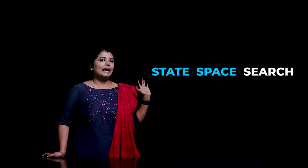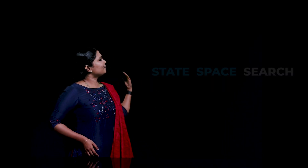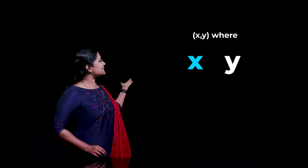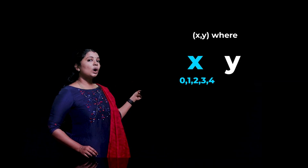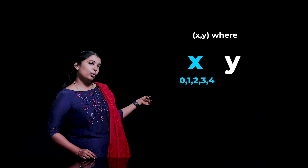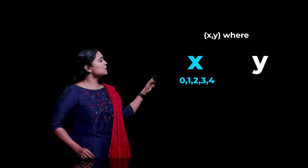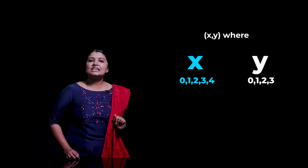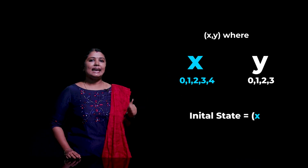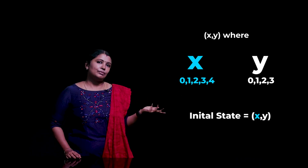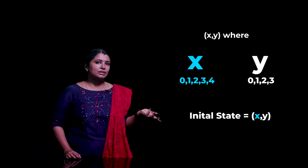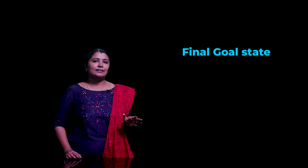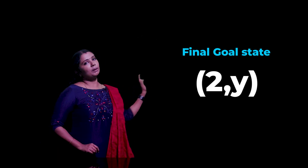So we need a representation in which we have an ordered pair (x, y), where x can have values 0, 1, 2, 3, and 4, and y can have values 0, 1, 2, and 3. Our initial state will be (x, y) — meaning any amount can be in both jugs. And our final goal state will be (2, y).